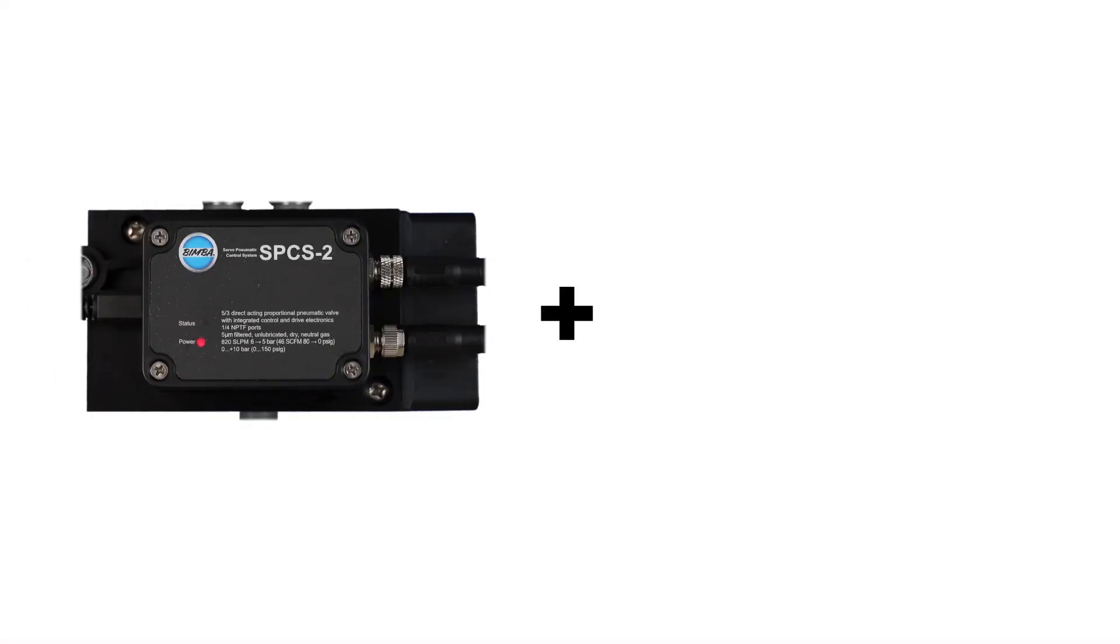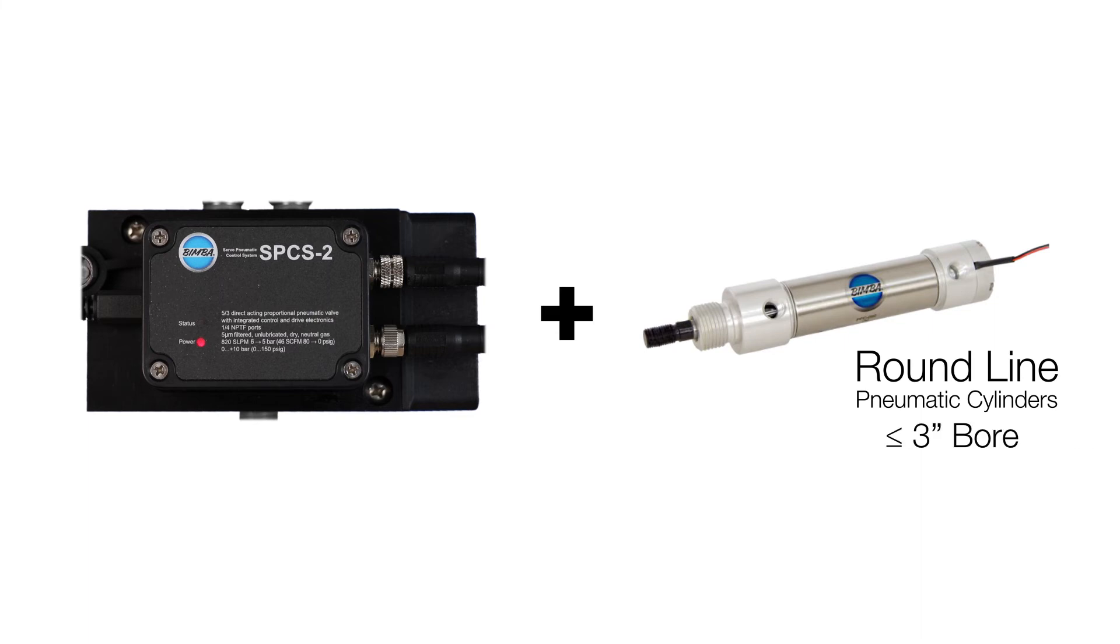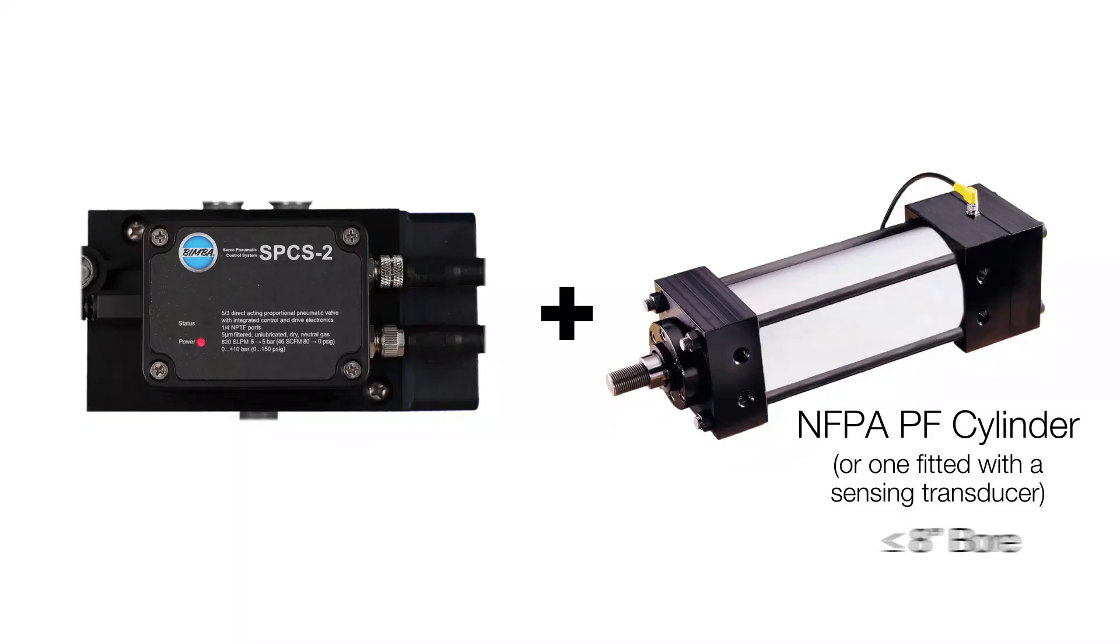They're also compatible with most round line pneumatic cylinders up to a three inch bore. Have an NFPA position feedback cylinder or one fitted with sensing transducers? The SPCS2 works with them up to an eight inch bore.